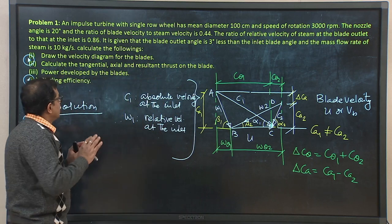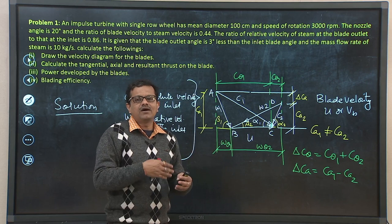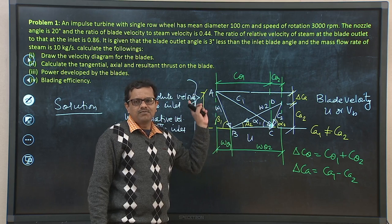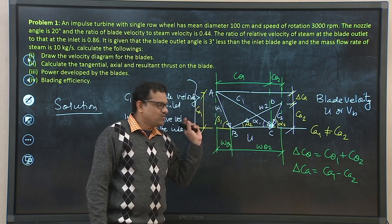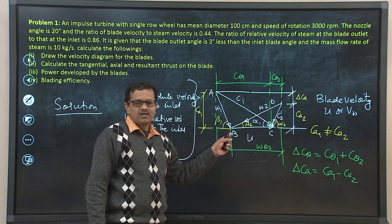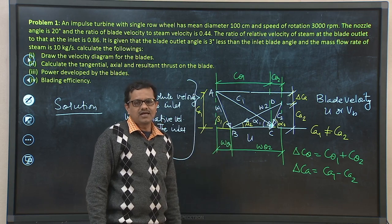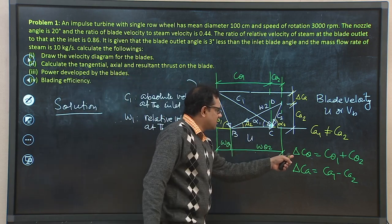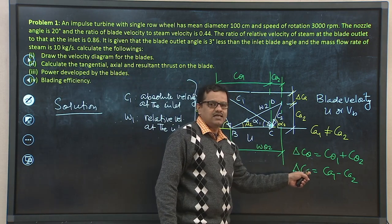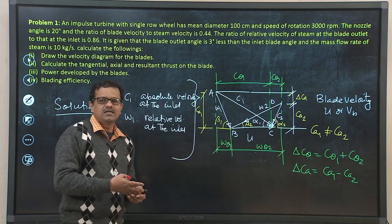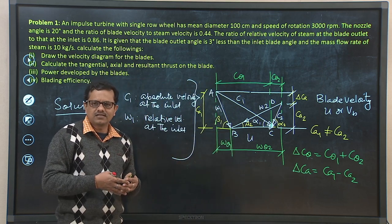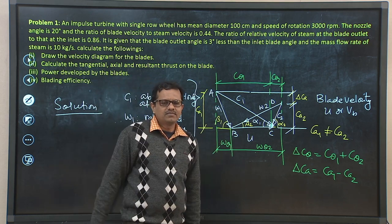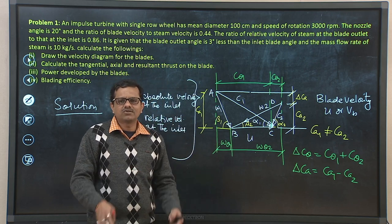With this velocity diagram, we will solve a few numerical problems using the impulse turbine velocity diagram. There are two important relations from the velocity triangles. Delta_c_theta and delta_c_a are the two key components for calculating tangential and axial thrust. The problem can be solved graphically or analytically using trigonometric relations.